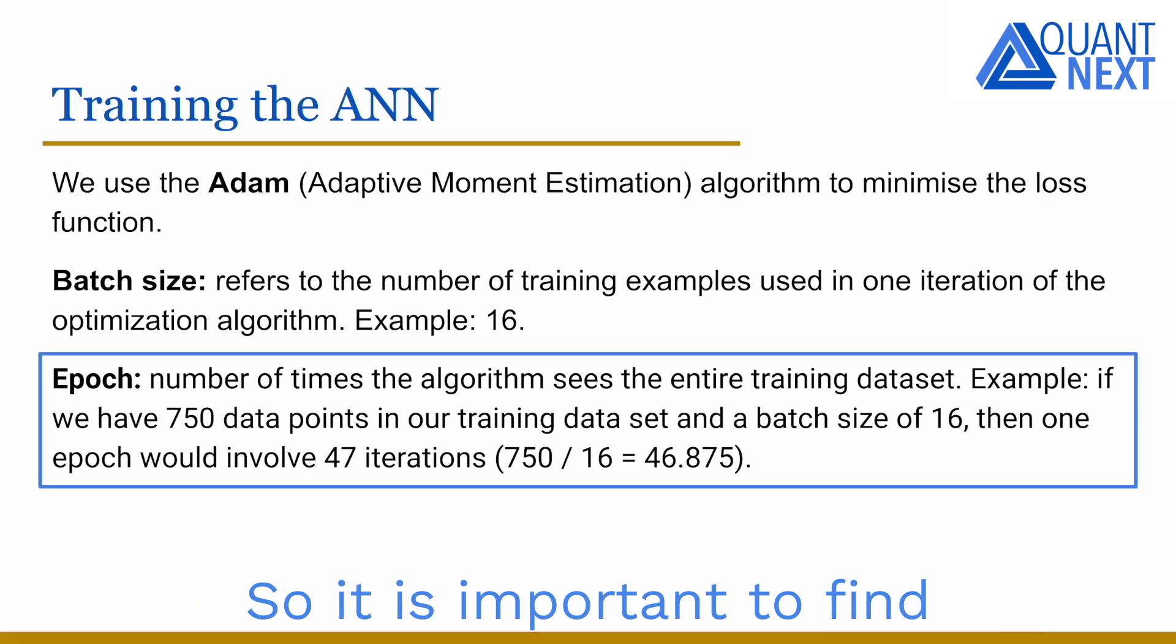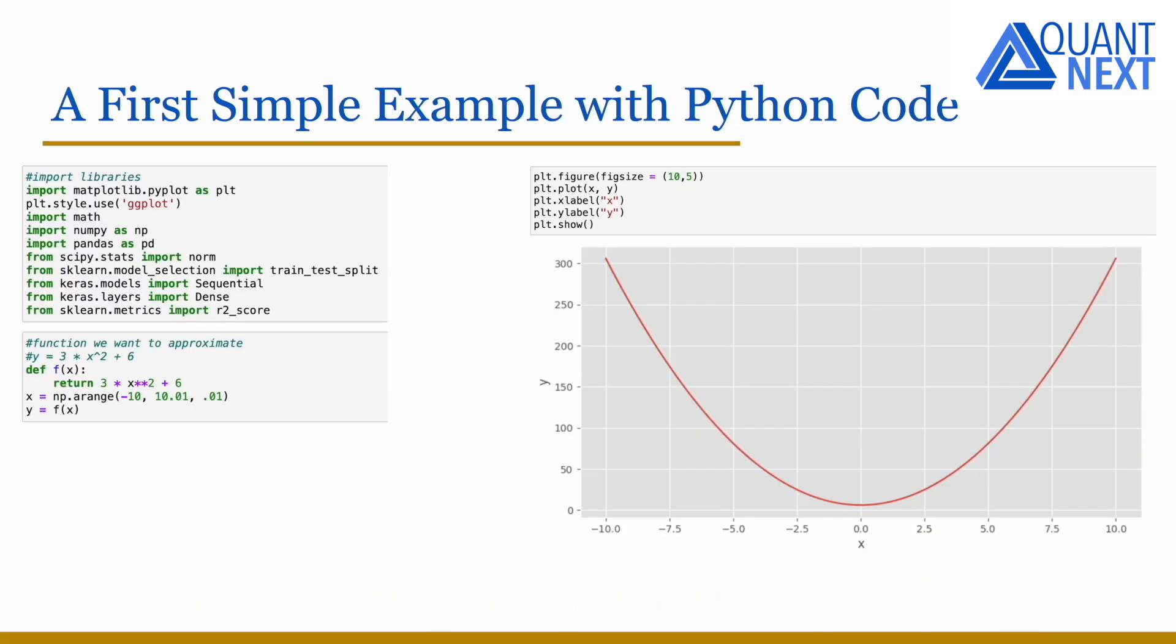We will train a neural network to estimate a parabolic function. For that, we will build the artificial neural network with Keras framework in Python. First, we import the libraries that will be used and you can see on the right side the function that we want to estimate.